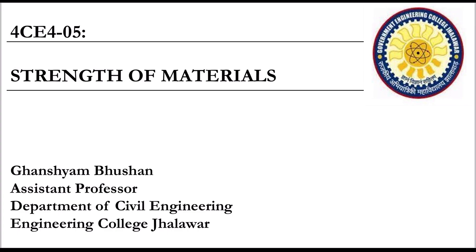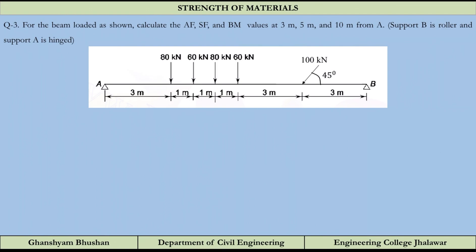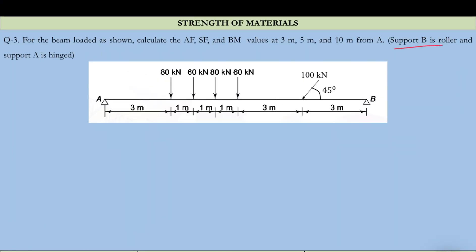Let us try to solve a few more problems. This is problem number one for today. For the beam loaded as shown, calculate the AF (axial force), SF (shear force), and BM (bending moment) values at 3m, 5m, and 10m from support A. Support A is a hinge support and support B is a roller, as given in the question.